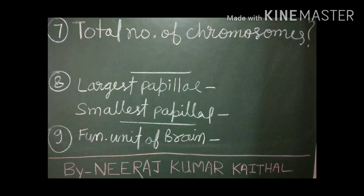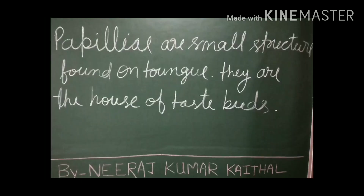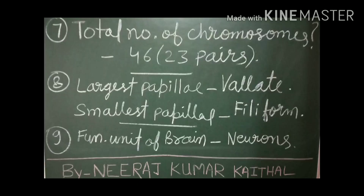Question number seven: what is the total number of chromosomes present in a cell? Question number eight: give the name of the largest papillae and the smallest papillae. Question number nine: what is the structural and functional unit of the brain? Answers: there are a total of 46 — 23 pairs — of chromosomes present in a normal cell. The largest papillae is vallate; the smallest papillae is filiform. Papillae are small structures found on the tongue — they are the house of taste buds. The structural and functional unit of the brain is the neuron.